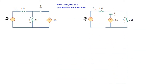We can redraw the circuit with the resistance toward the right-hand side — this is the load resistance. To find the Thevenin equivalent, we remove the 2-ohm load resistor and find the open-circuit voltage, V_thevenin.